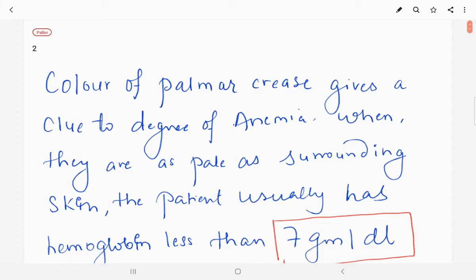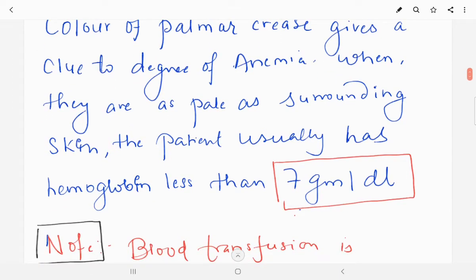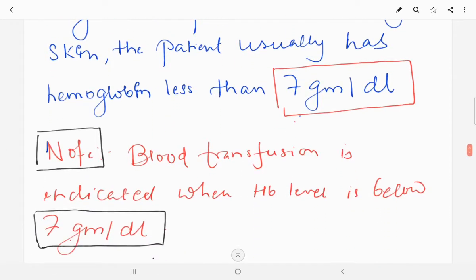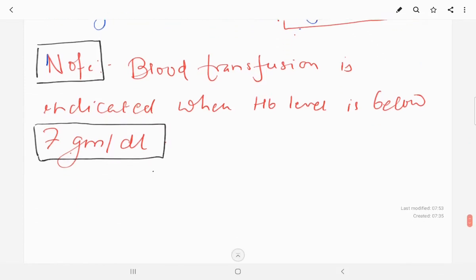Color of palmar creases gives a good idea about degree of anemia. When they are as pale as surrounding skin, the patient usually has hemoglobin less than 7 grams per deciliter. The importance of this is that blood transfusion is indicated when hemoglobin level is below 7 grams per deciliter.